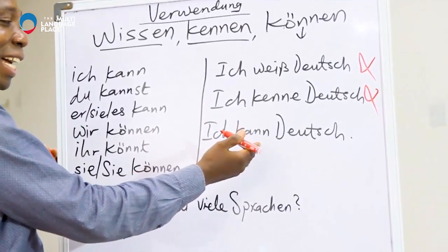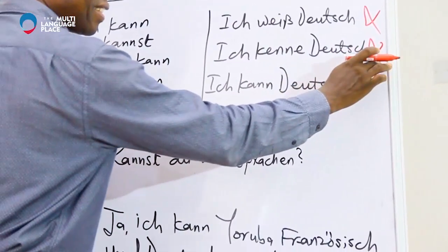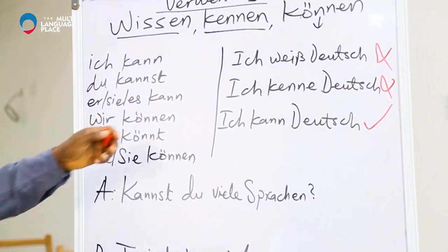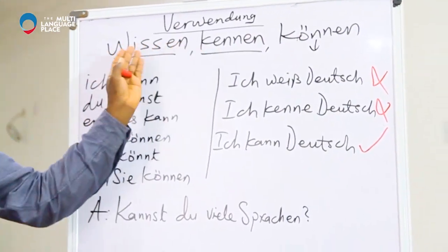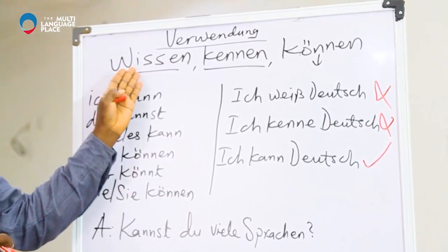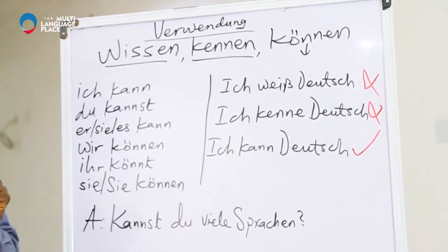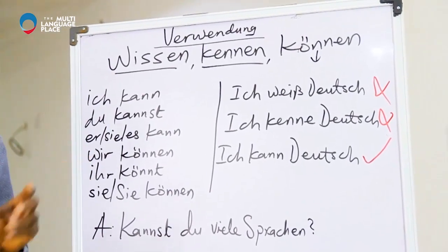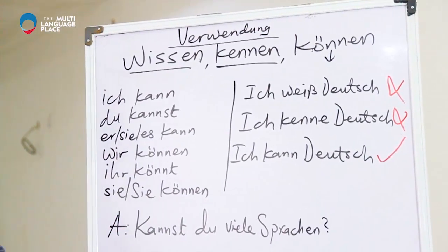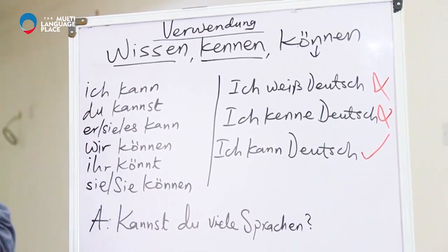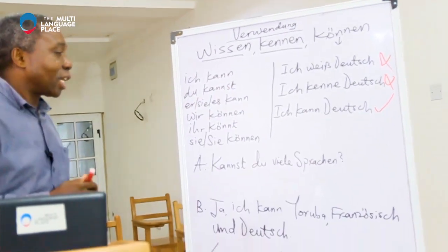That is the right sentence. So this verb is very important when we are talking about 'wissen' and 'kennen.' 'Können' is very important because that is the only verb you are allowed to use when you want to say 'I know how to speak German,' 'I know how to speak French,' 'I know how to speak Spanish.' It's only 'können.'